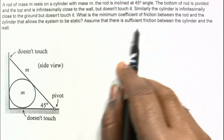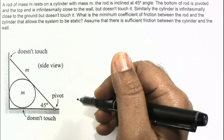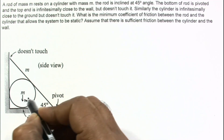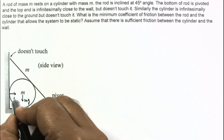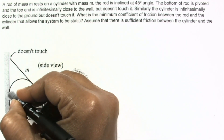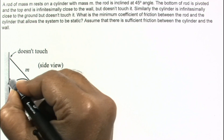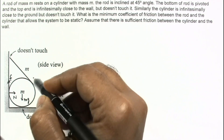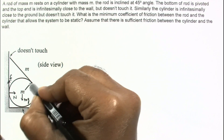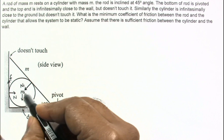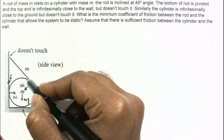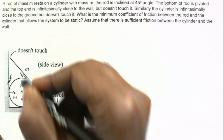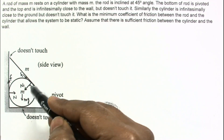Assume there is sufficient friction between the cylinder and the wall. Let us make the free body diagram first. On the cylinder, forces are Mg passing through its center of mass. There is one normal reaction from the wall, and since the cylinder tends to slide down, friction acts upward. These friction and normal reaction forces are from the wall. From the rod-cylinder contact, the normal reaction N1 and friction F1 both pass through the center, and since the cylinder tends to slide down, friction F1 acts upward.